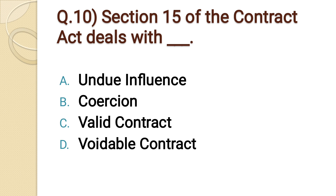Question number ten: Section 15 of the Contract Act deals with dash dash. Option A: undue influence. Option B: coercion. Option C: valid contract. Option D: voidable contract. The correct option is option B: coercion.